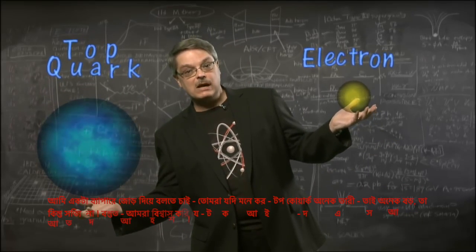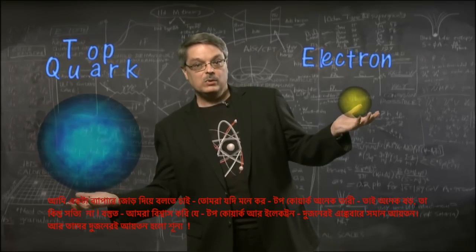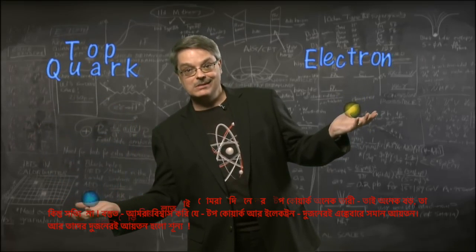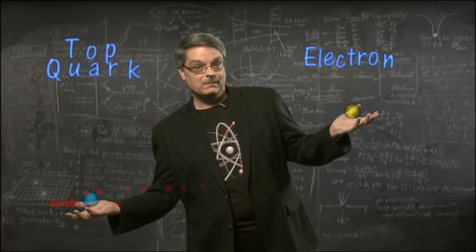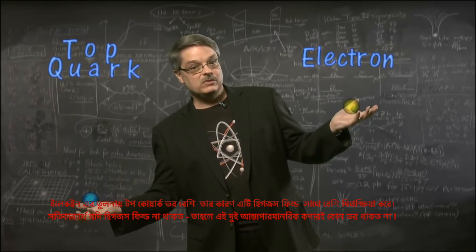I'd like to stress that we believe the top quark is not more massive because it's bigger. It's not. In fact, we believe that both the top quark and the electron are exactly the same size. Indeed, they both have zero size. The top quark is more massive than the electron simply because it interacts more with the Higgs field.